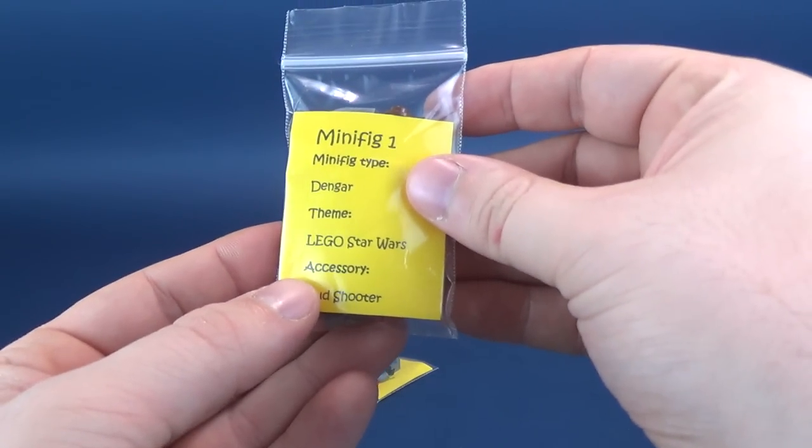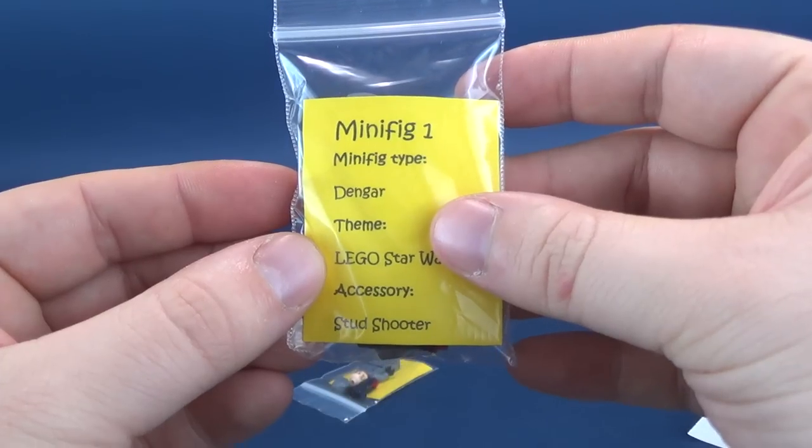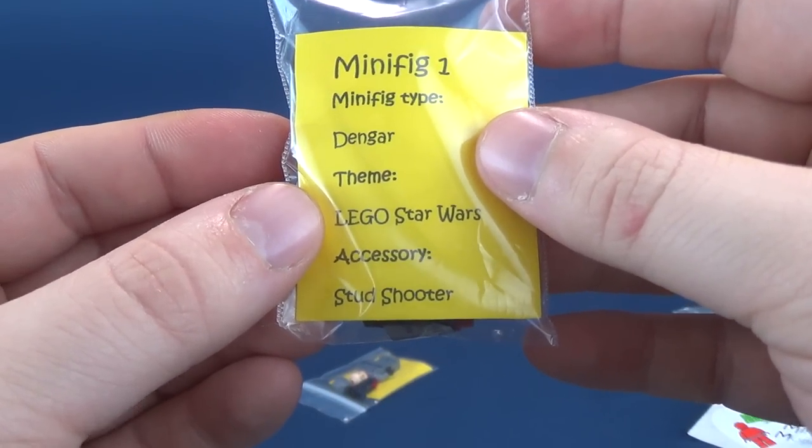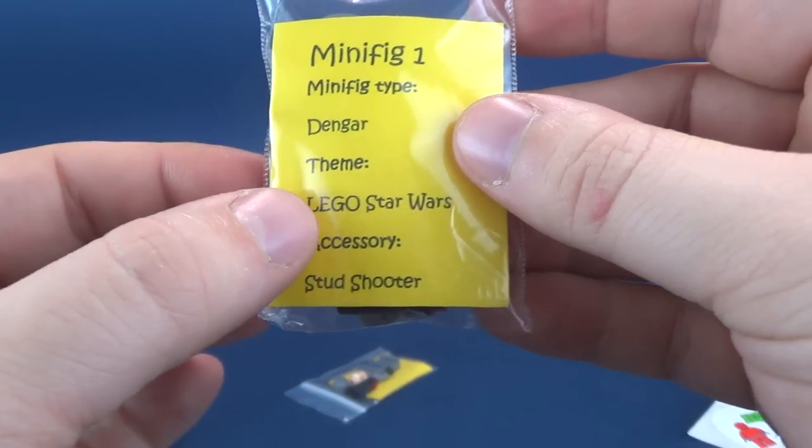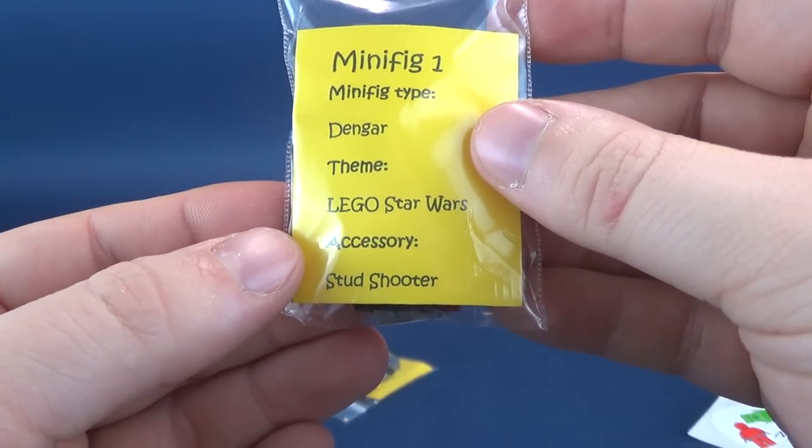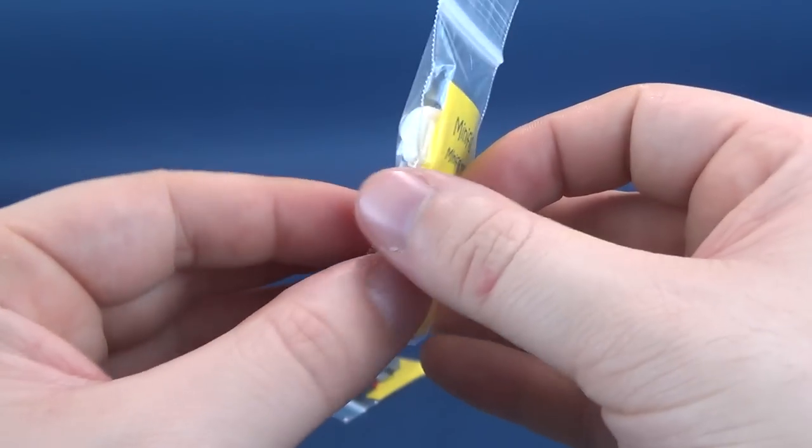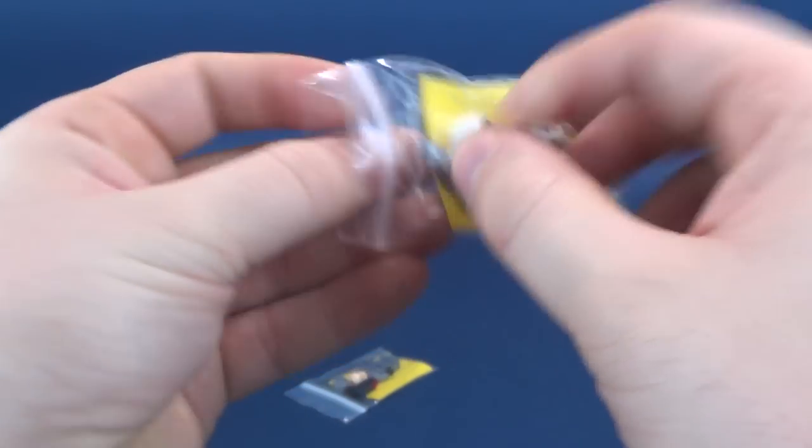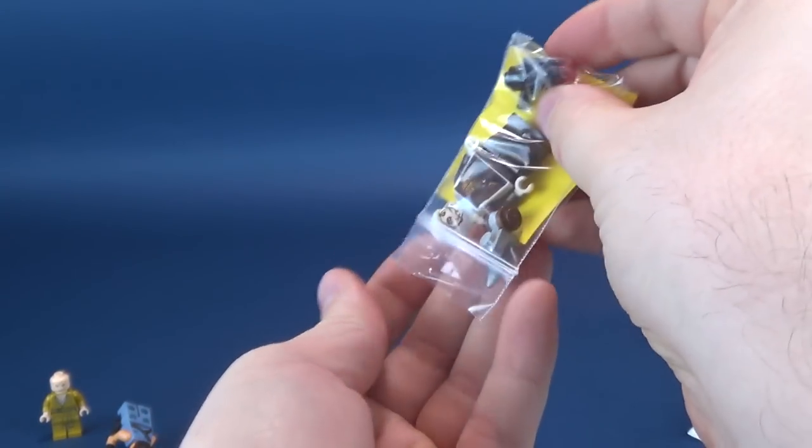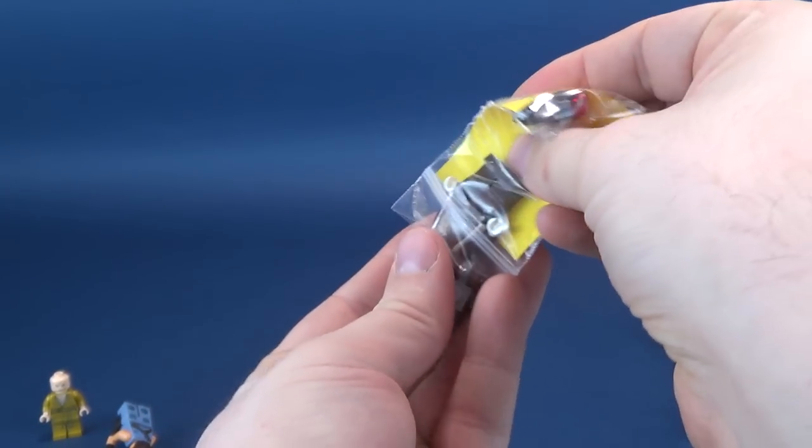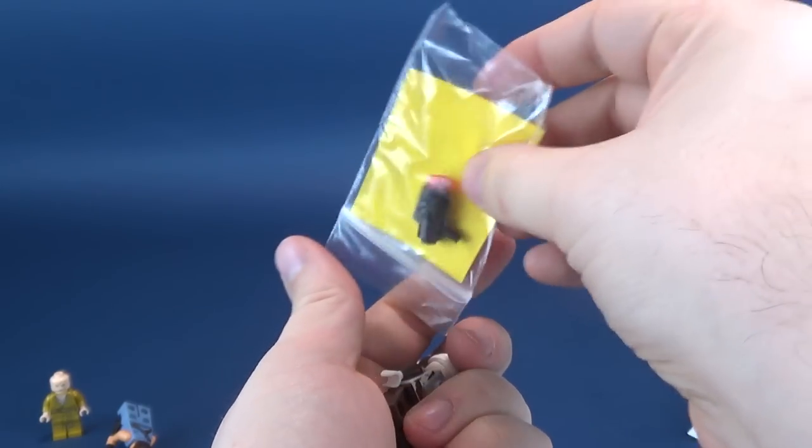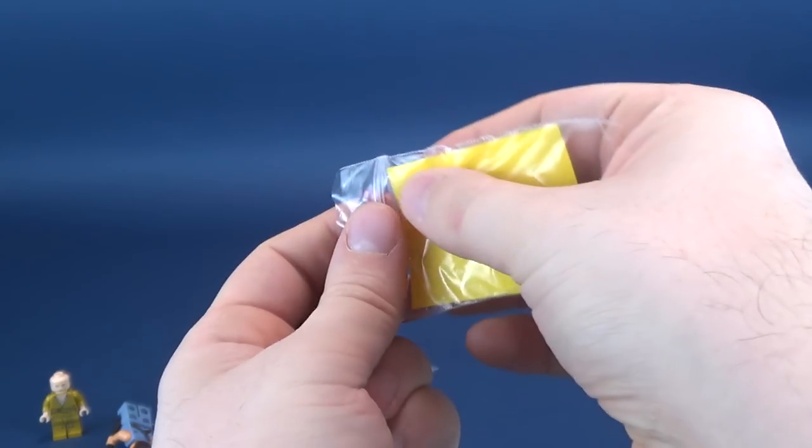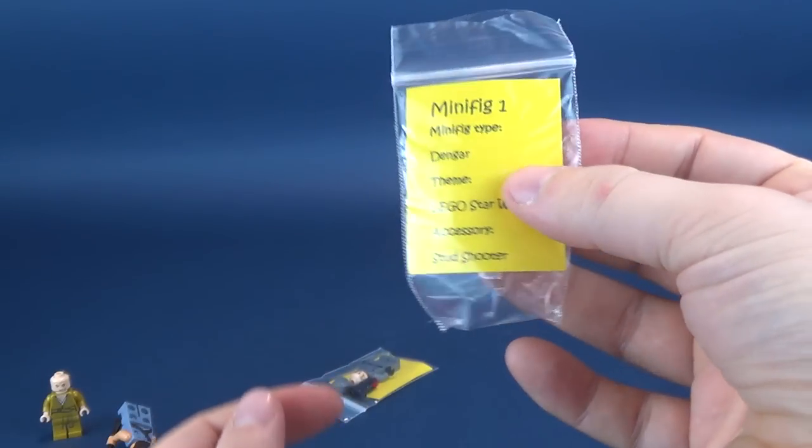We also have minifigure number one, which I guess I should have done in proper sequence. Minifigure number one was Dengar. I love just saying that name. Dengar. The theme, once again, was Lego Star Wars. He comes with a stud shooter. Well, I think I better hit the hills. I'm here all day. We're going to go ahead and pop this guy out of his bag. There we go. It comes with a stud shooter. What's that all about? I guess that was its name. Stud shooter.